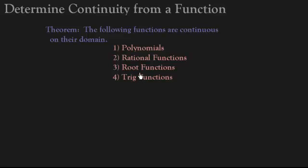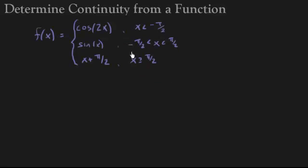So let's take a look at our example now. Here's our piecewise defined function. We have the cosine of 2x when x is less than negative π/2. We have sine of x between negative π/2 and π/2. And then the line x plus π/2 when x is greater than or equal to π/2.